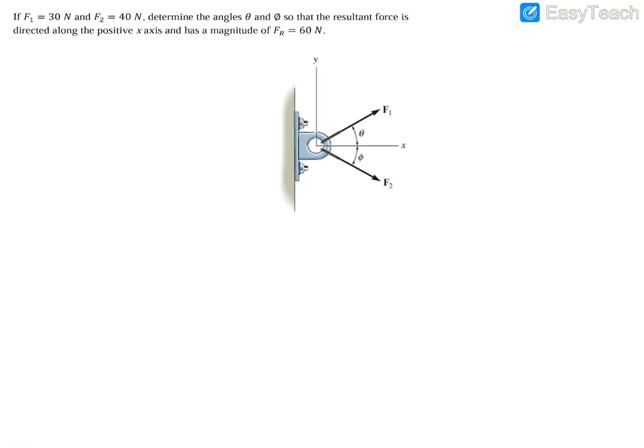Alright guys, so in this example here we have two forces acting on a part. We have force F1, which is acting at some angle theta above the positive x-axis. Then we have force 2, which is acting at some angle phi below the x-axis. We're told that these two forces yield a resultant net force being horizontally to the right at 60 newtons.